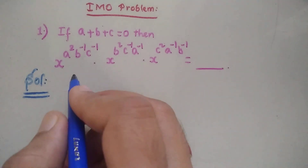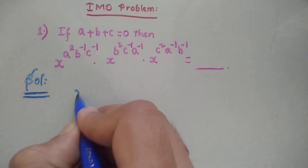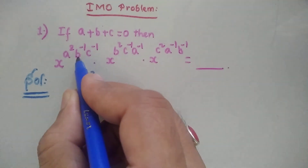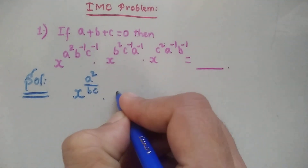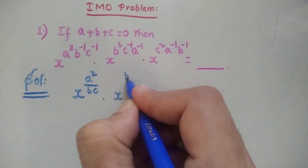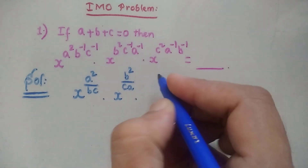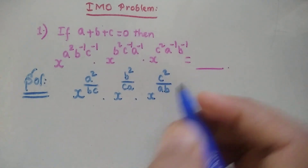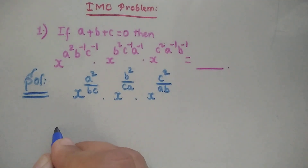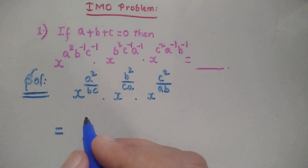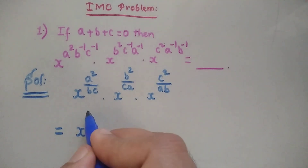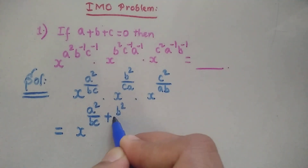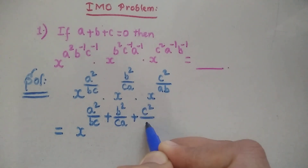First of all, we can write this value as x^(a²/bc) · x^(b²/ca) · x^(c²/ab). We know the formula a^m · a^n = a^(m+n), so we can write this as x^(a²/bc + b²/ca + c²/ab).